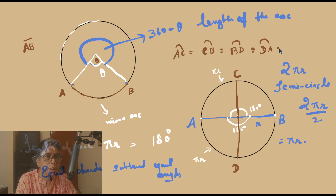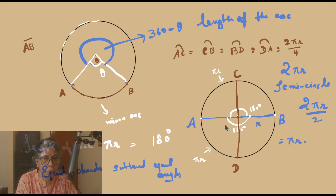And what is the length of all these arcs? It would be equal to 2πr divided by 4, because the circle is divided into 4 equal parts. So the length of each arc would be equal to πr by 2.